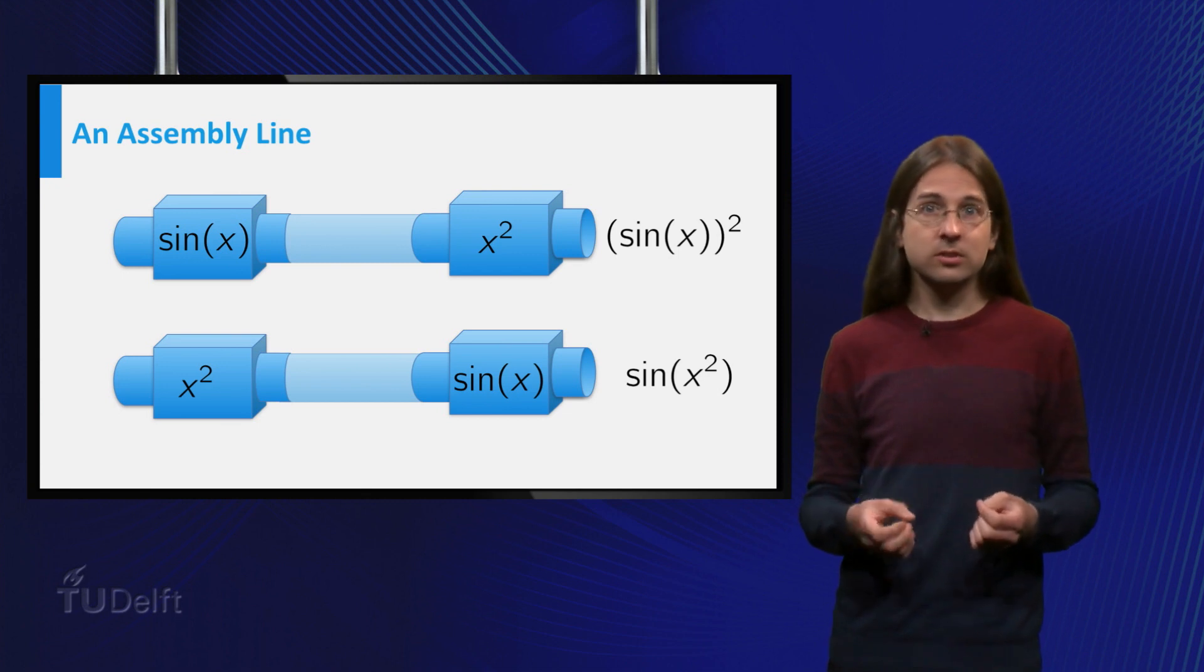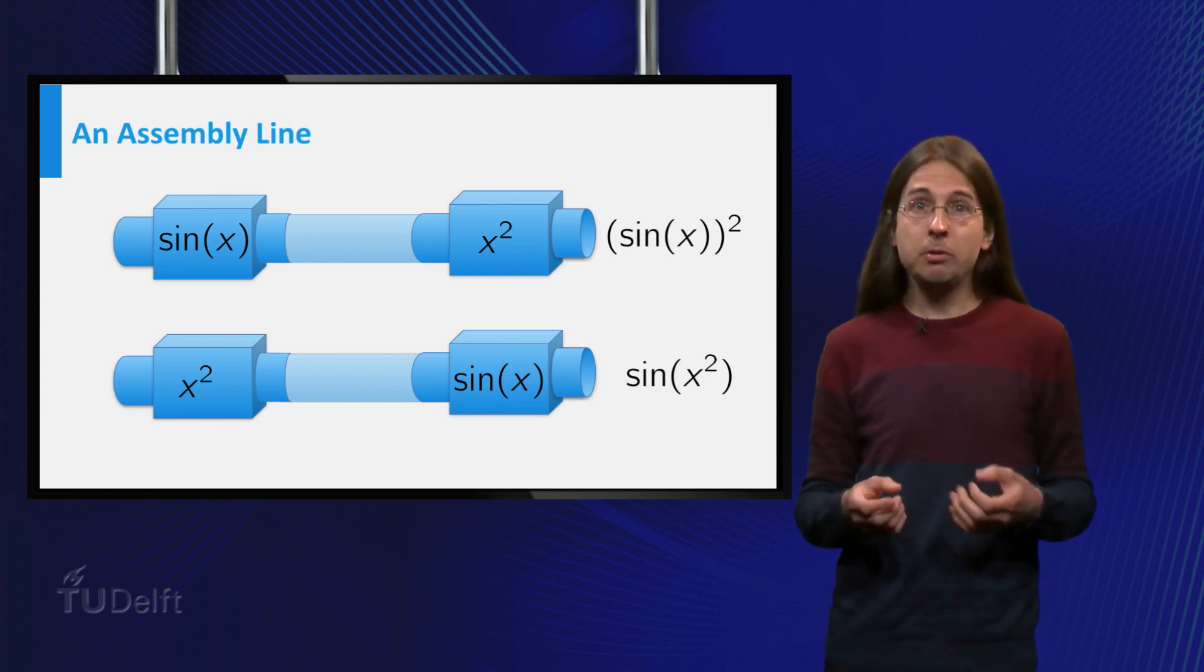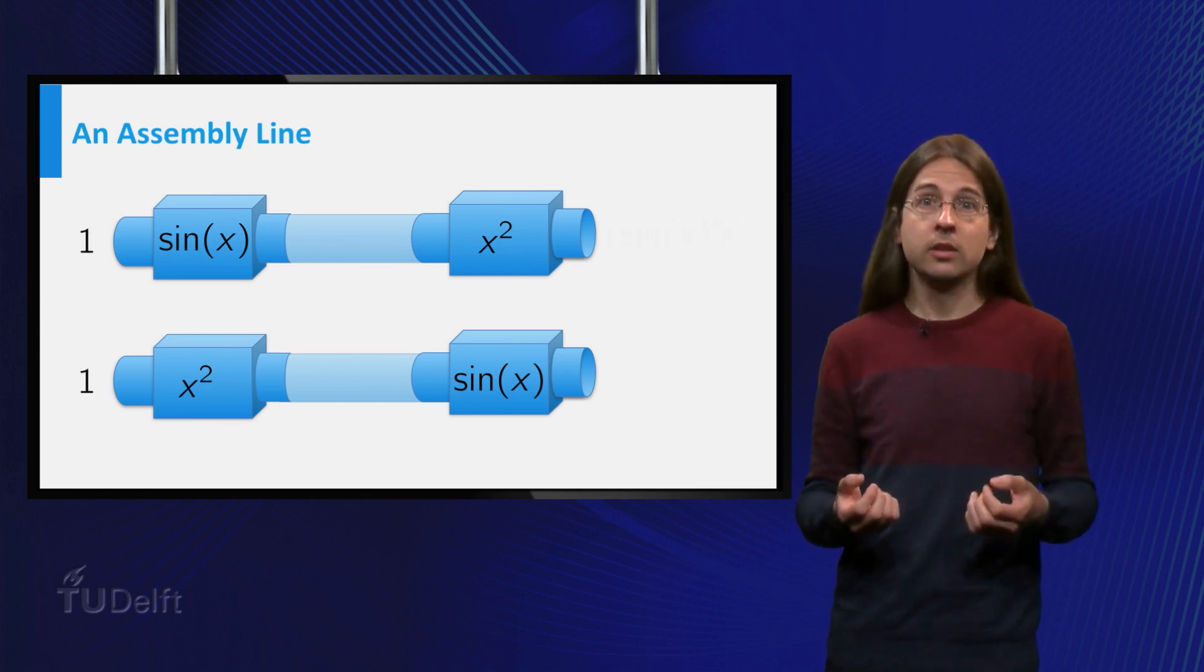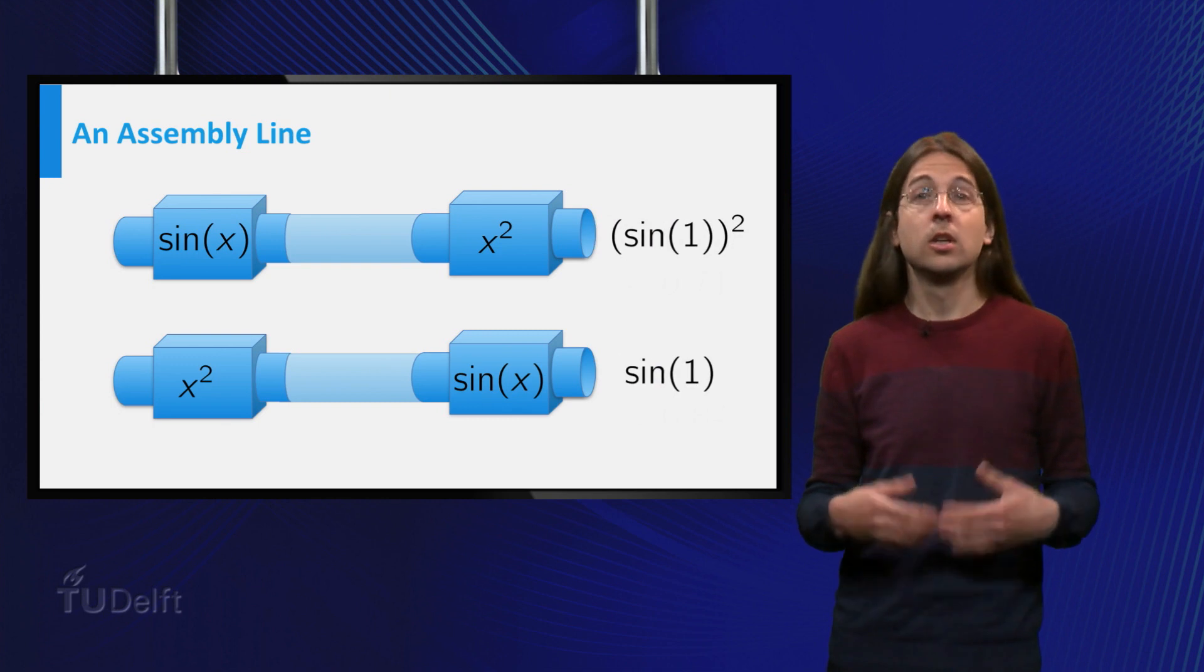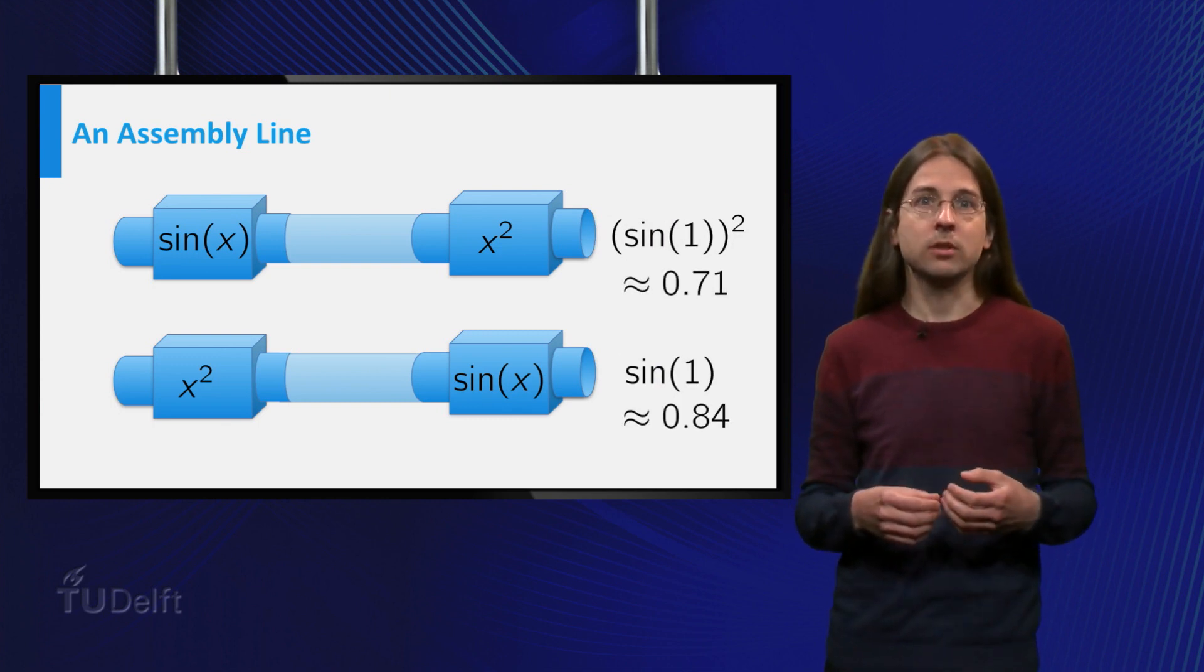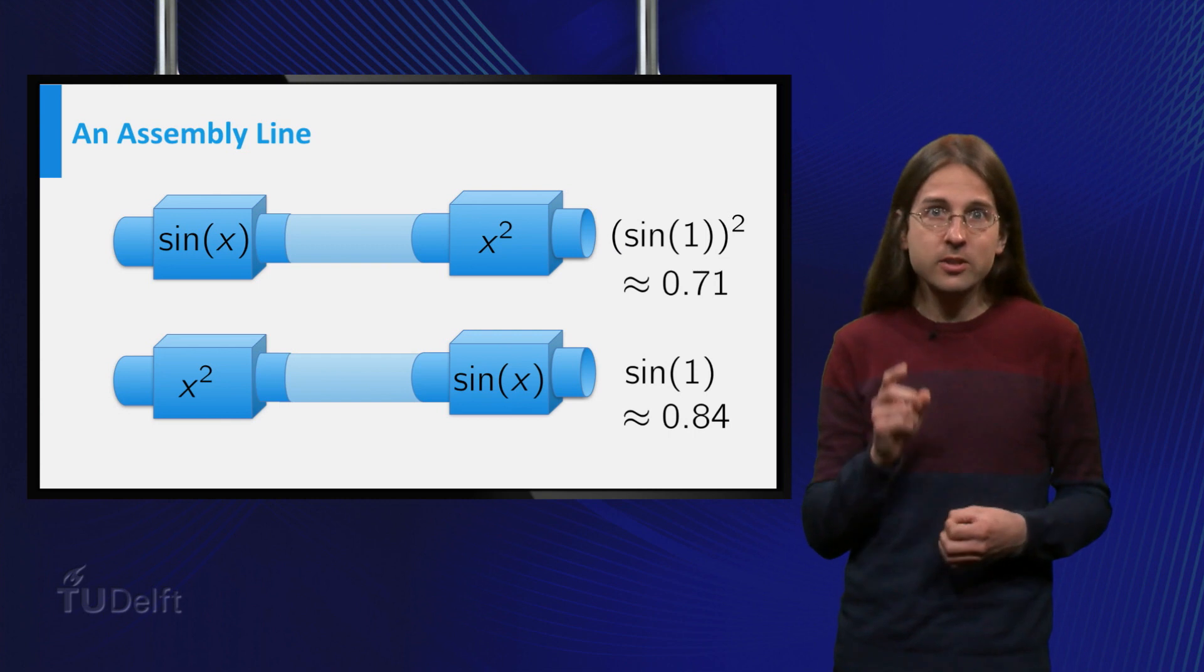Notice that these two expressions are not equal. If we plug in x equals 1, we obtain either sine of 1 squared is approximately 0.71 or sine of 1 is approximately 0.84. The order of operations matter.